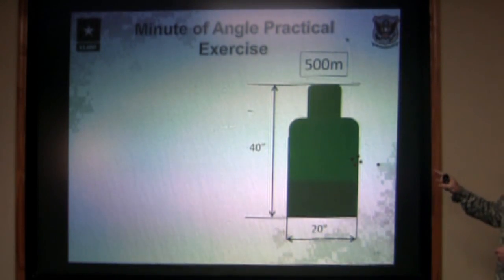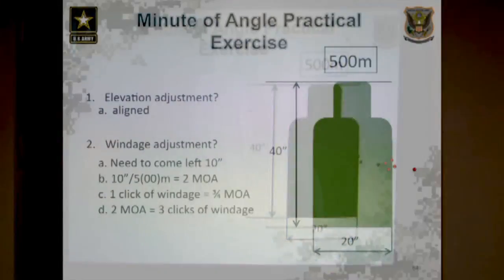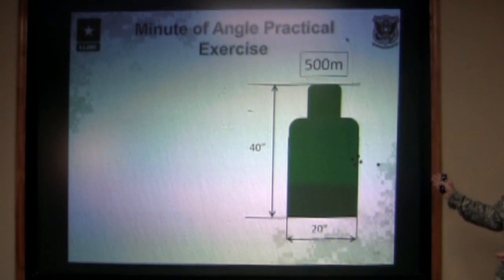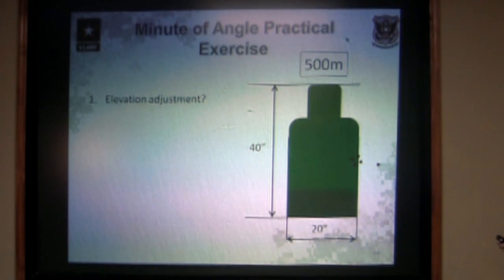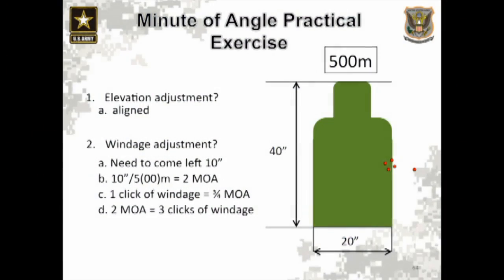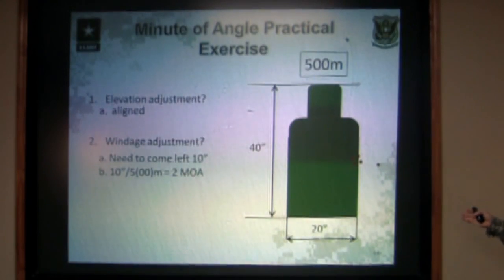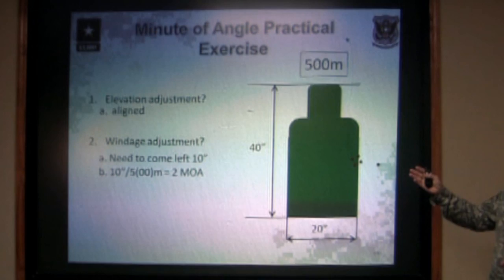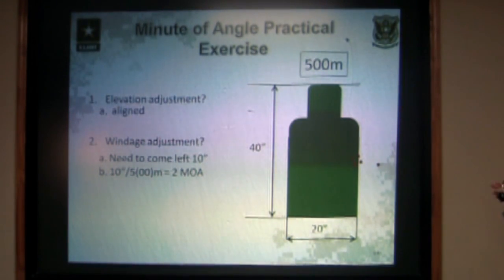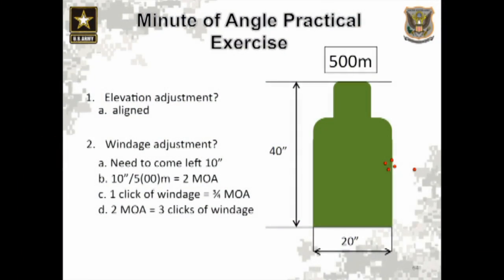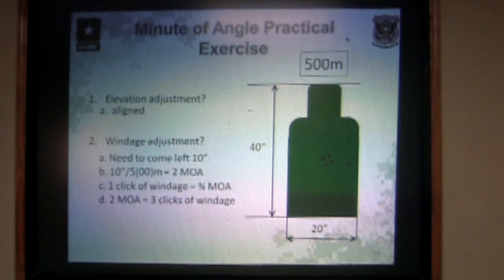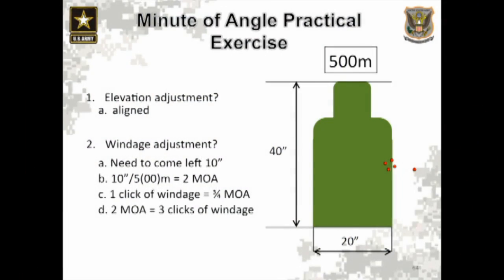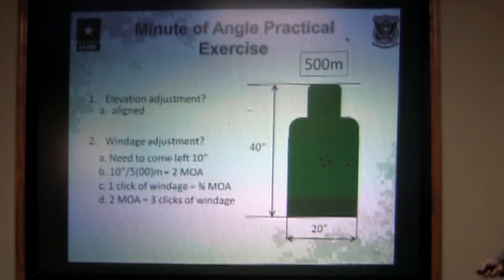Here we have a 500-meter target. Our group is on the right edge of the target. At 500 meters, the target is 20 inches wide, so to move our group from the right edge to center we need to move 10 inches left. The elevation adjustment is good — we turn our bullet drop compensator to 500 and the elevation is good. Ten inches at 500 meters is two minutes of angle: we took our 10 and divided it by the first number of our distance. Each click of windage on an M4 is worth three-quarters of a minute, so we go about three clicks left to get our group into the center of the target.